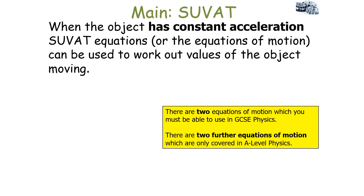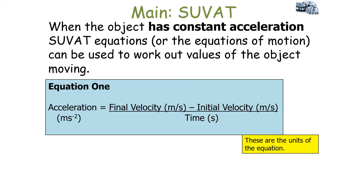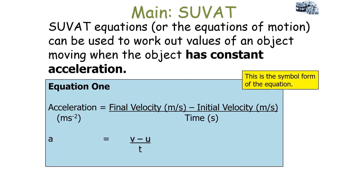There are two equations of motion you've got to be able to use in GCSE physics, with two further equations covered only at A level. The first equation is: acceleration equals final velocity minus initial velocity over time. With units included and written in symbol form, this is: a = (v − u) / t.